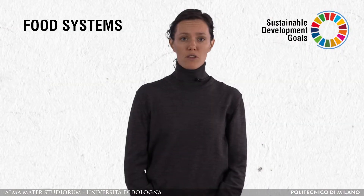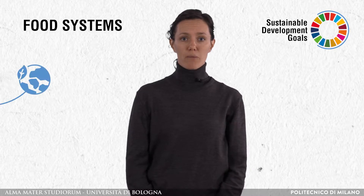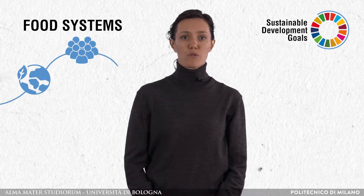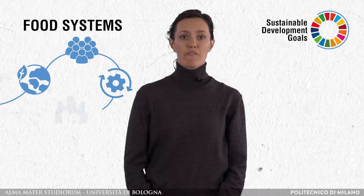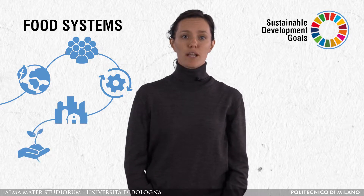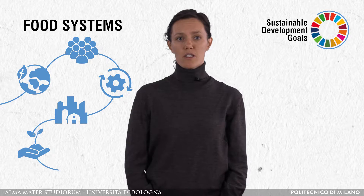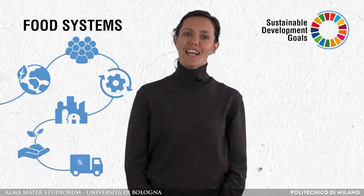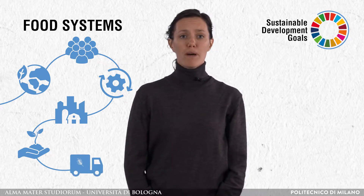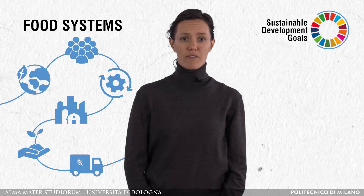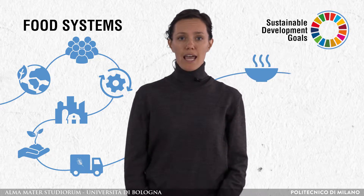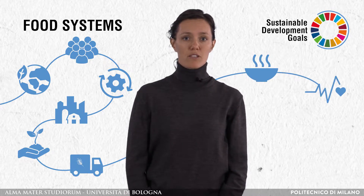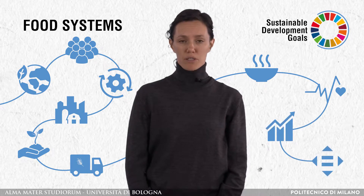Food, or better food systems, consist of both all the elements such as environment, people, inputs, processes, infrastructures, institutions and activities that relate to the production, processes, distribution, preparation and consumption of food. But also food systems include the outcomes of these activities, namely nutrition, health status, socio-economic growth and equity.